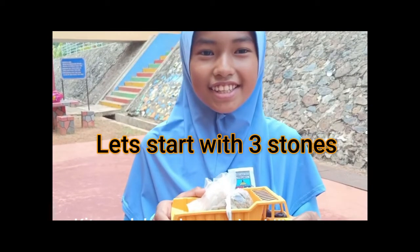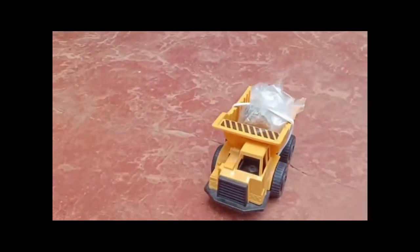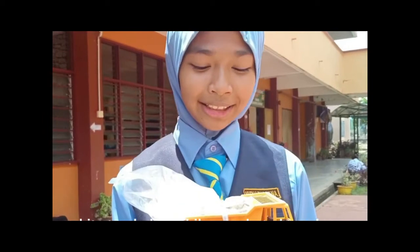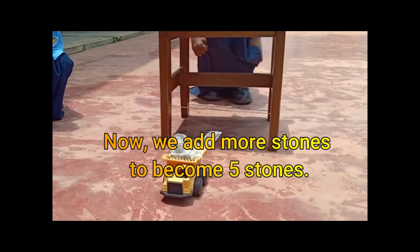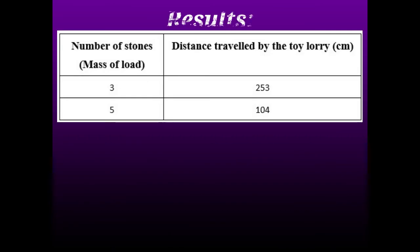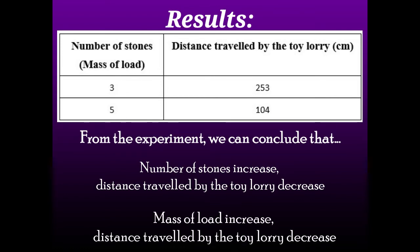Let's start with three stones. From the experiment, we can conclude that as the number of stones increases, the distance traveled by the lorry decreases. Or: as the mass of the object increases, the distance traveled by the lorry decreases.